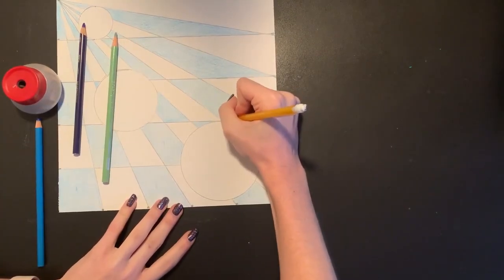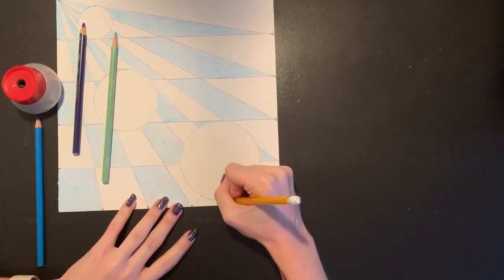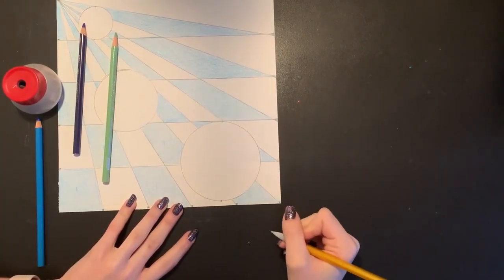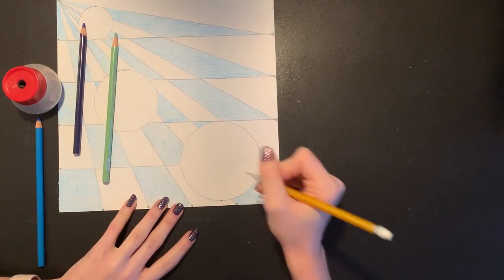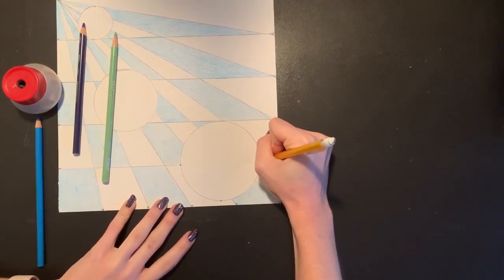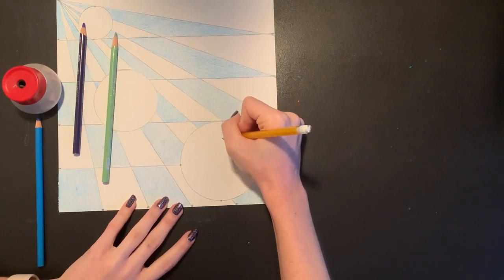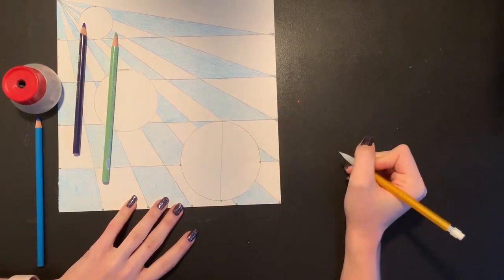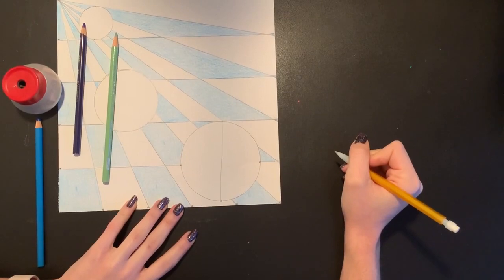I'm going to start by drawing a dot at the top and a dot at the bottom, kind of like in the center of my circles on the edge. I'm going to do the same thing on the sides, and I am going to draw a straight line to connect my dots, which is just going to split my circle in half.